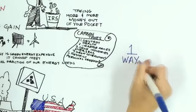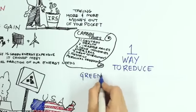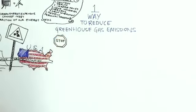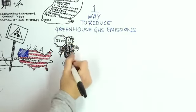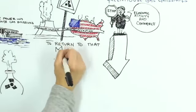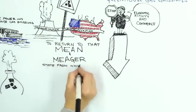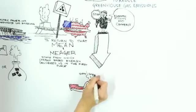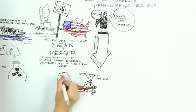Which leaves us with only one immediate and effective way to reduce greenhouse gas emissions. To simply cease all economic activity, all commerce in the world. To return to that mean and meager state from which carbon-based energy delivered us in the first place. Dirty, smelly, difficult, and short lives.